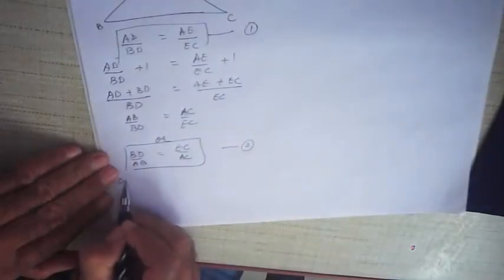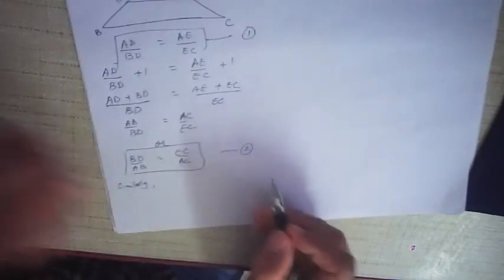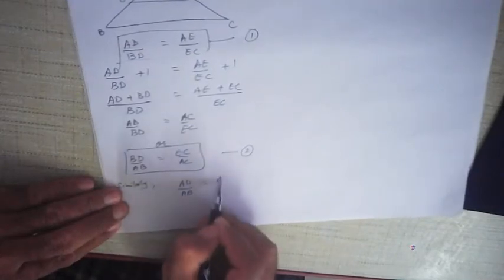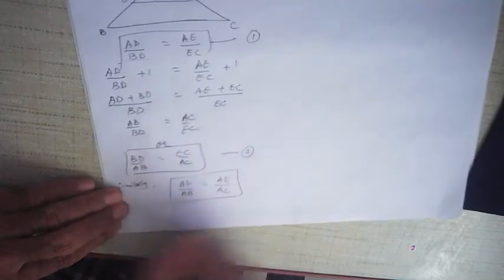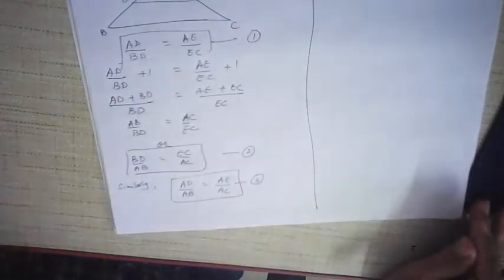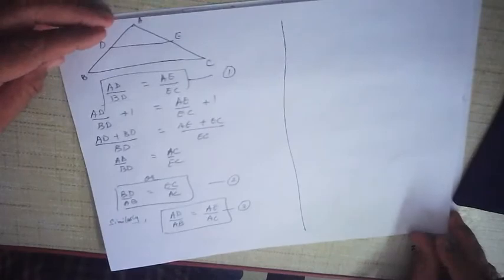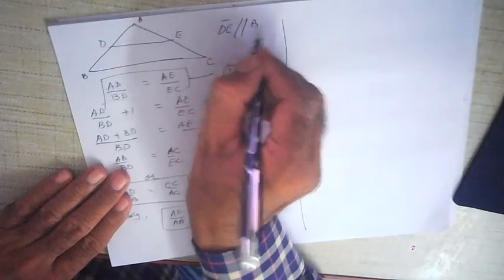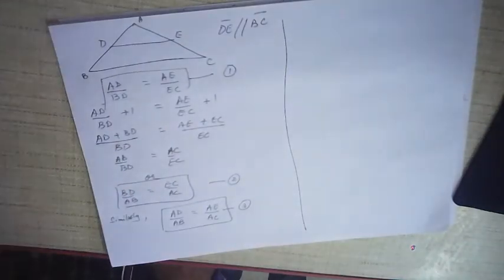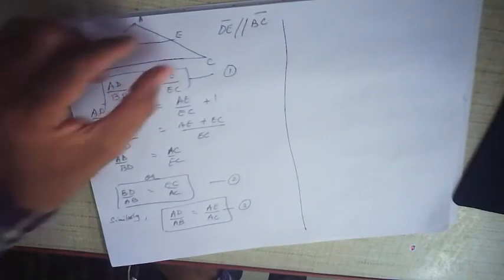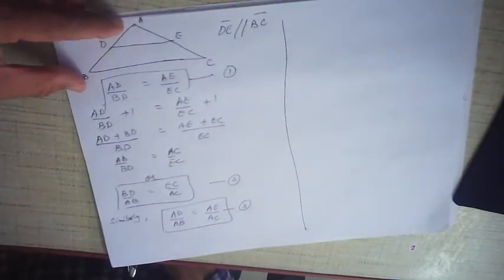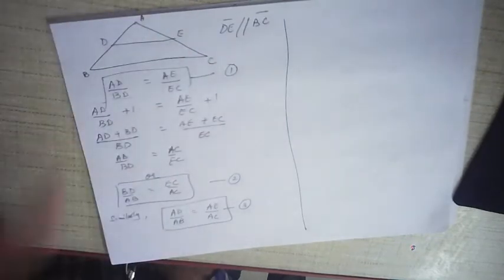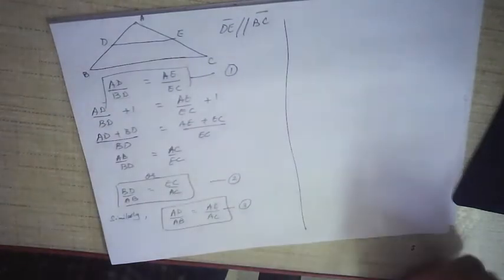Similarly, from result number two we can derive that AD/AB = AE/AC — this is result number three. So in triangle ABC where DE is parallel to BC, we have three important results: (1) AD/BD = AE/EC, (2) AD/AB = AE/AC, and (3) BD/AB = EC/AC. All three results are extremely important for problems involving calculations.